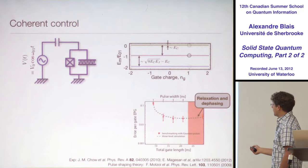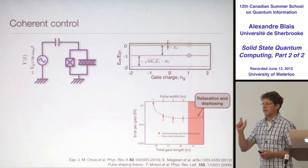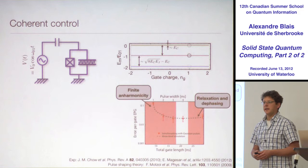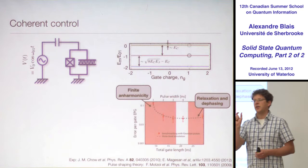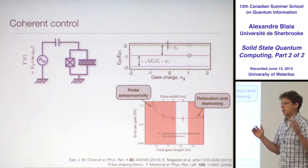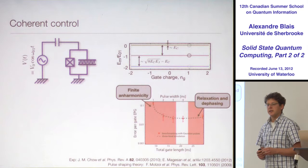How can we understand this? The longer you make the gate, the more T1 and T2 will hurt you. So you have to make the gate much smaller than T1 and T2. But when you go to smaller and smaller pulses, you hit the finite anharmonicity. Why? Because very sharp pulses have a wide Fourier transform — wider as they get shorter — and those wide frequency components can excite the system to higher levels.